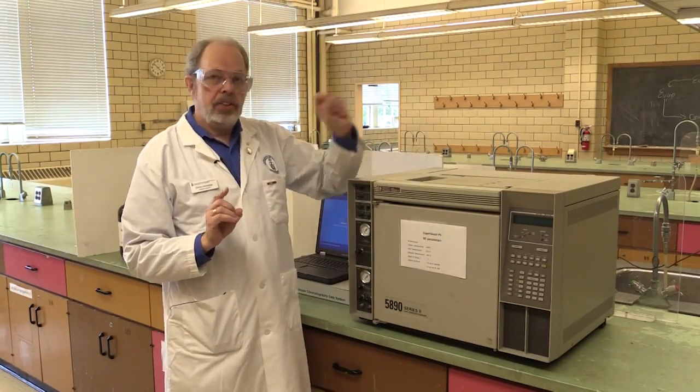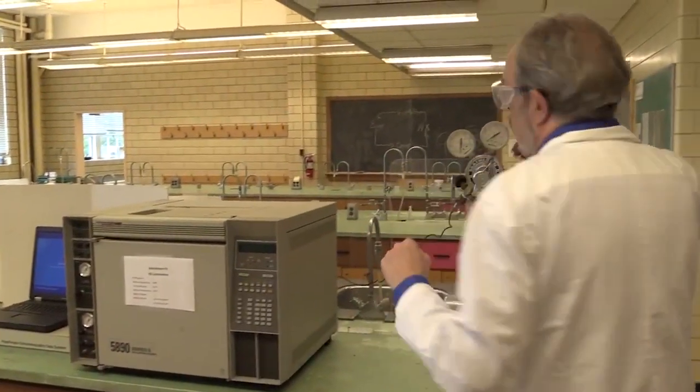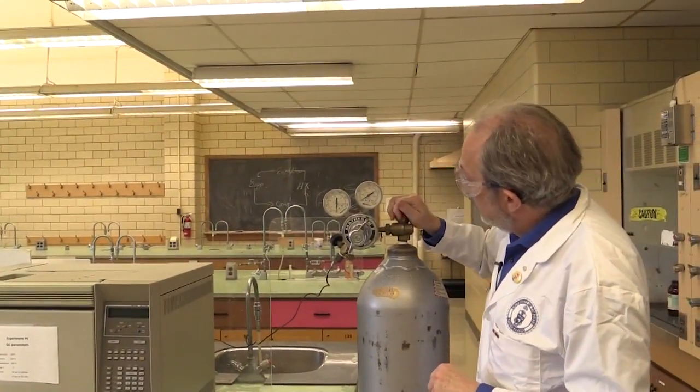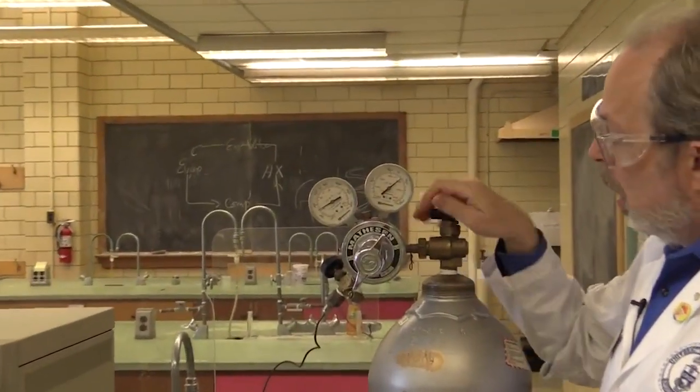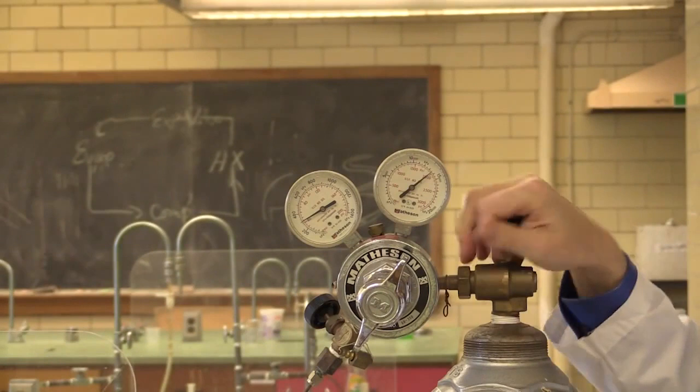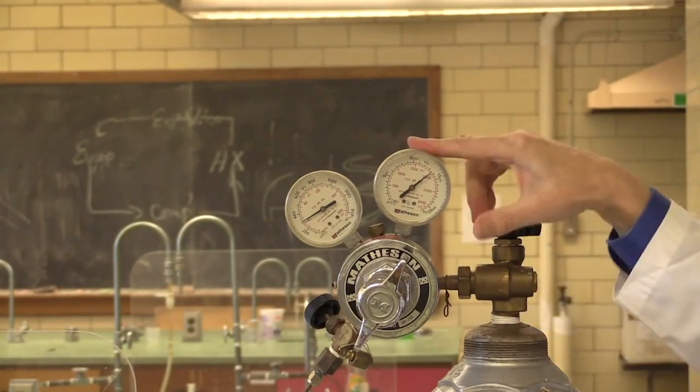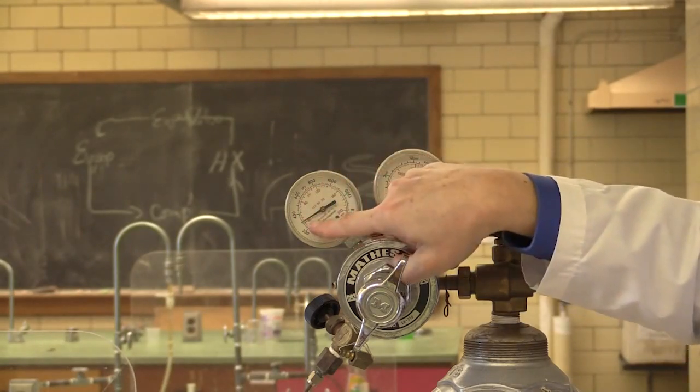The first thing to do is to turn the gas on, which is over here. The carrier gas is helium, and there's a tank of it here. Just open the cylinder all the way, righty tighty, lefty loosey, so turn it as far counterclockwise as you can. There's about 2,000 psi in here, and it's flowing out on this regulator at 42.